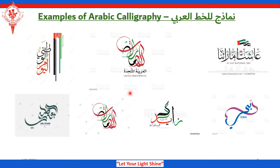What's written here? The one in the middle is Al-Imarat Al-Arabiyya Al-Mutahidah. And the name of Sheikh Zaid is written in calligraphy — in artistic handwriting. Aashat Imaratuna. Al-Yawm al-Watani. Dubai — can you see how the name of Dubai is written in Arabic calligraphy? Abu Dhabi.